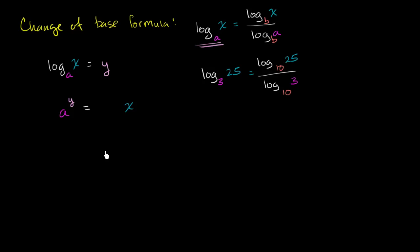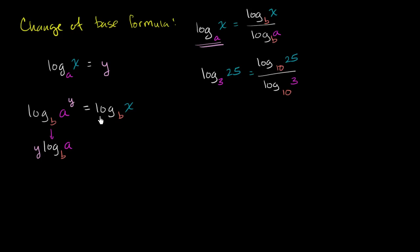Now let's introduce the logarithm base b. To do that, I'm just going to take log base b of both sides of this equation — log base b of the left-hand side, and log base b of the right-hand side. We know from our logarithm properties that the logarithm of something to a power is the same thing as the power times the logarithm of that something. So logarithm base b of a to the y is the same thing as y times the logarithm base b of a. This is a traditional logarithm property. It's going to be equal to log base b of x.